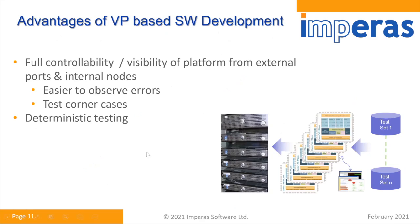To recap the advantages of using a virtual platform for software development: it includes full controllability and visibility of the platform from both external ports and internal node points of view, making it easy to observe errors and test corner cases. Testing is deterministic. It's also very easy to include virtual platforms into your agile development process — for example, running VPs on your server farm for continuous integration.